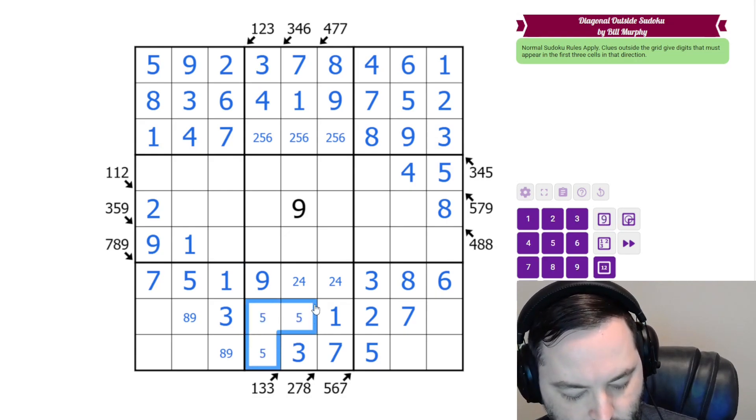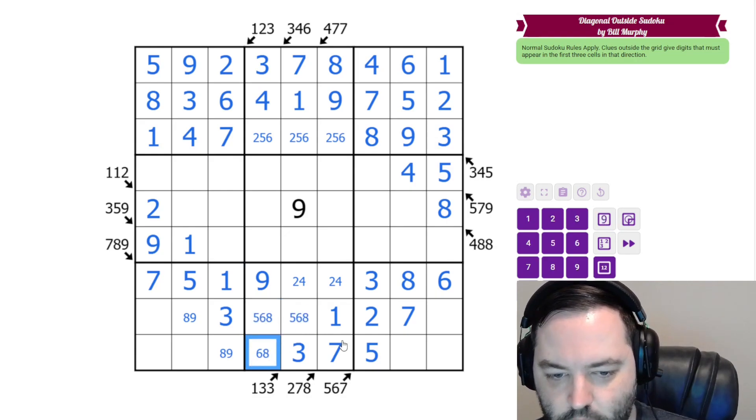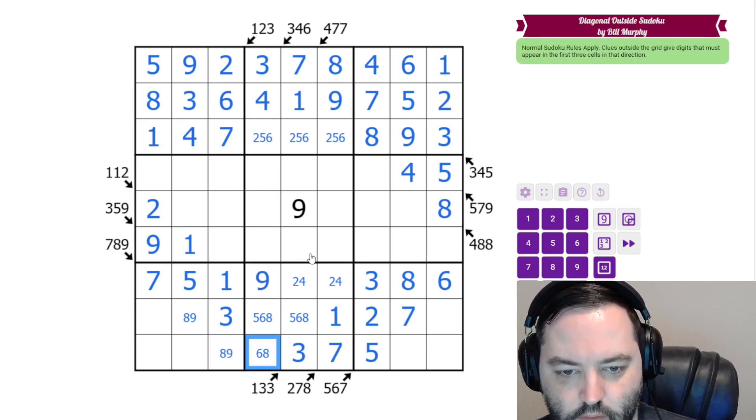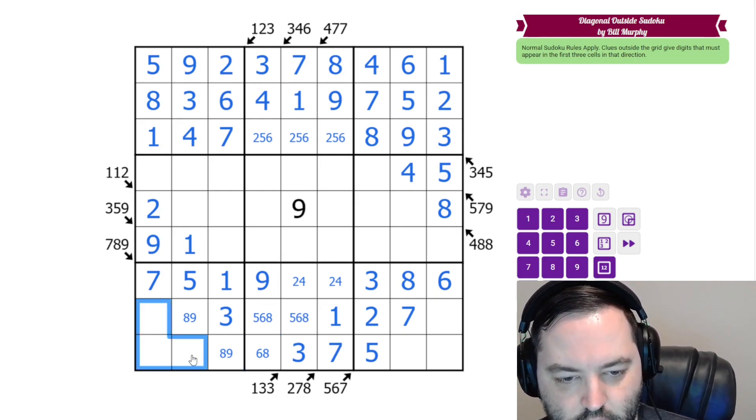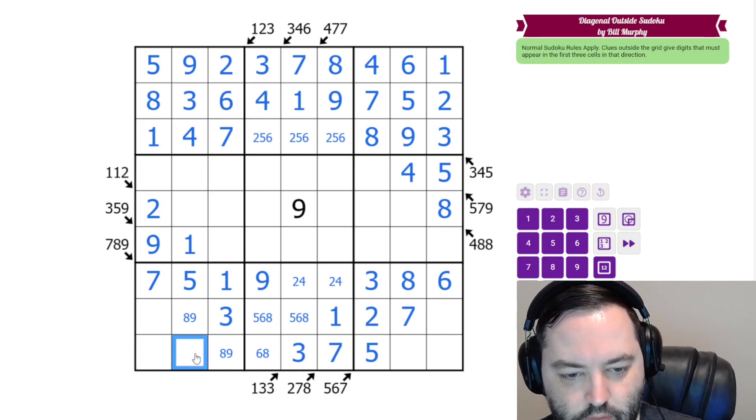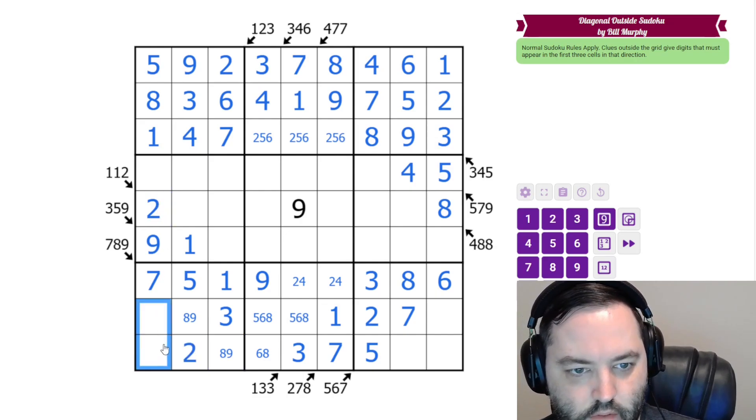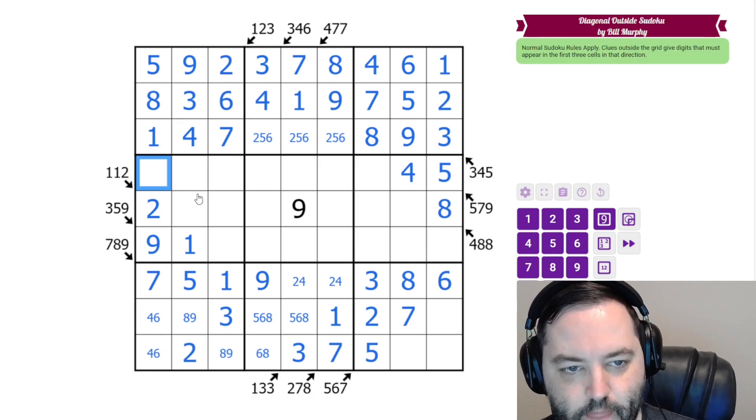These are 5, 6, 8. That one can't be 5, but I think that's all we can do with those. Down here we need a 2, but there's a 2 there. So 2 has to go here. These are 4, 6. This is 3.